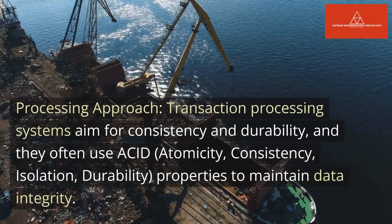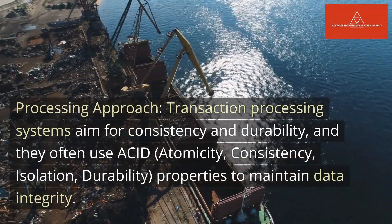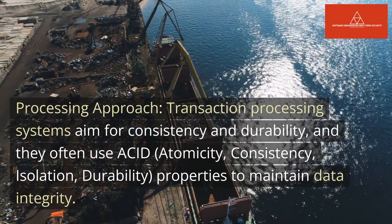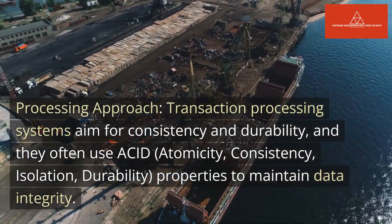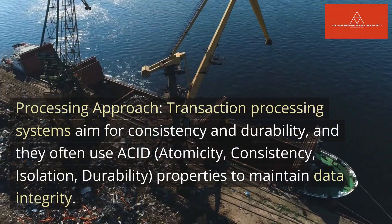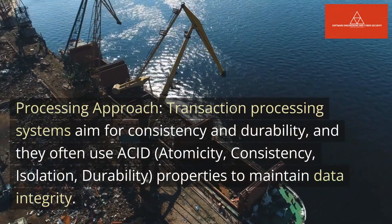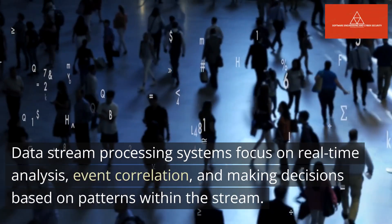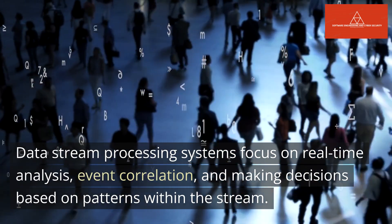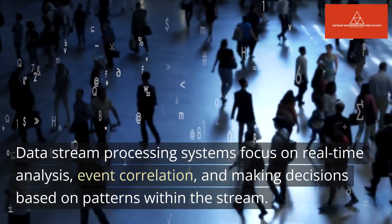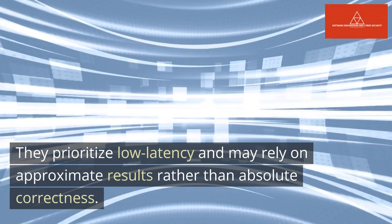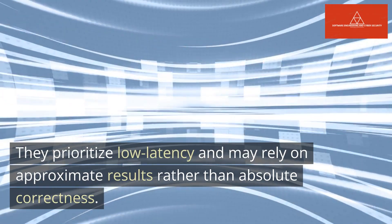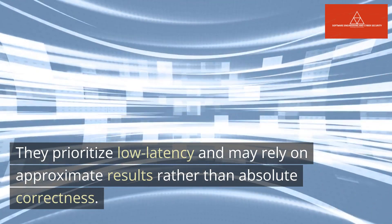Processing approach: transaction processing systems aim for consistency and durability, and they often use ACID — atomicity, consistency, isolation, durability — properties to maintain data integrity. Data stream processing systems focus on real-time analysis, event correlation, and making decisions based on patterns within the stream. They prioritize low latency and may rely on approximate results rather than absolute correctness.